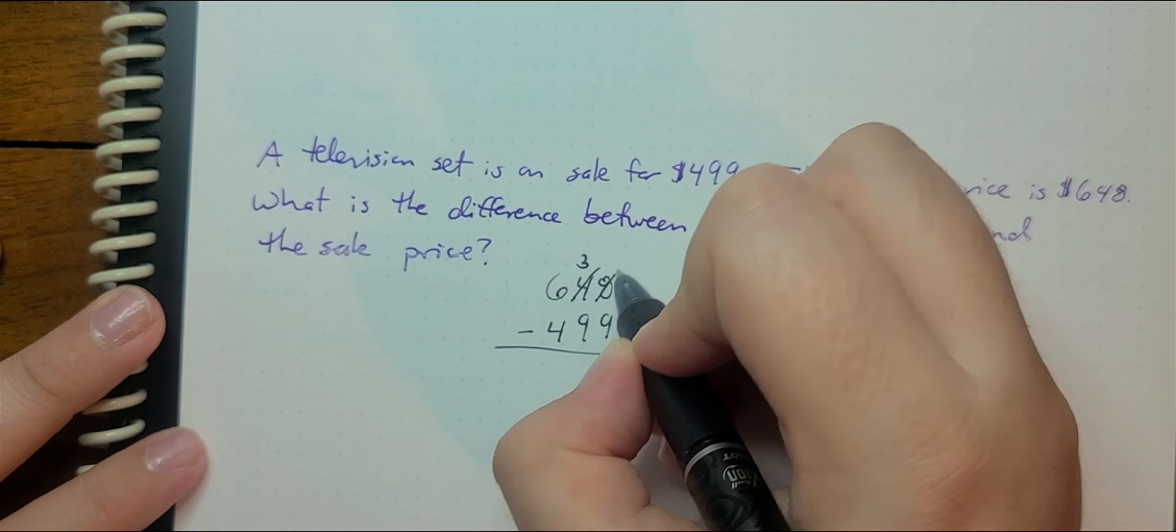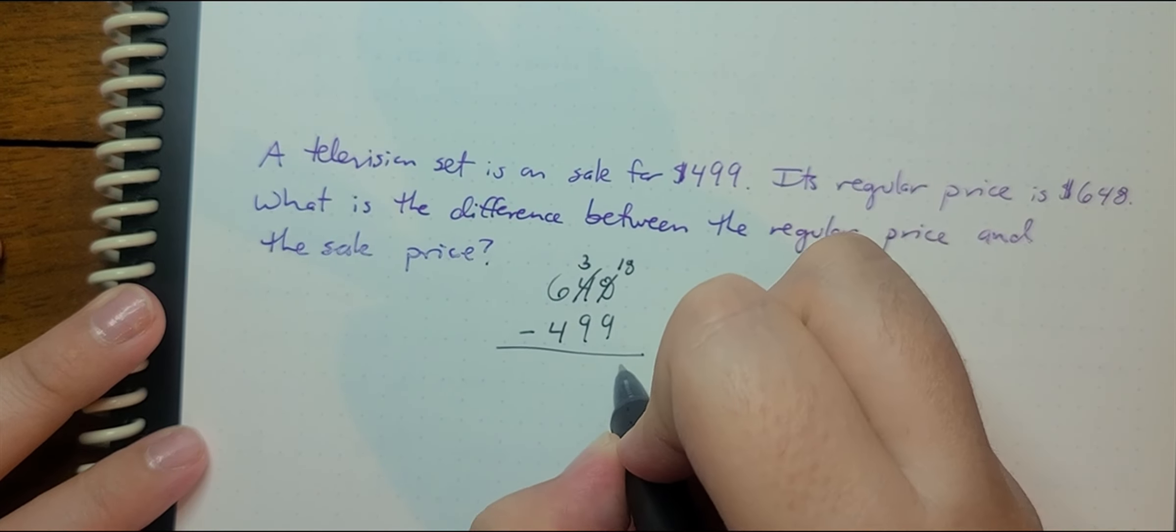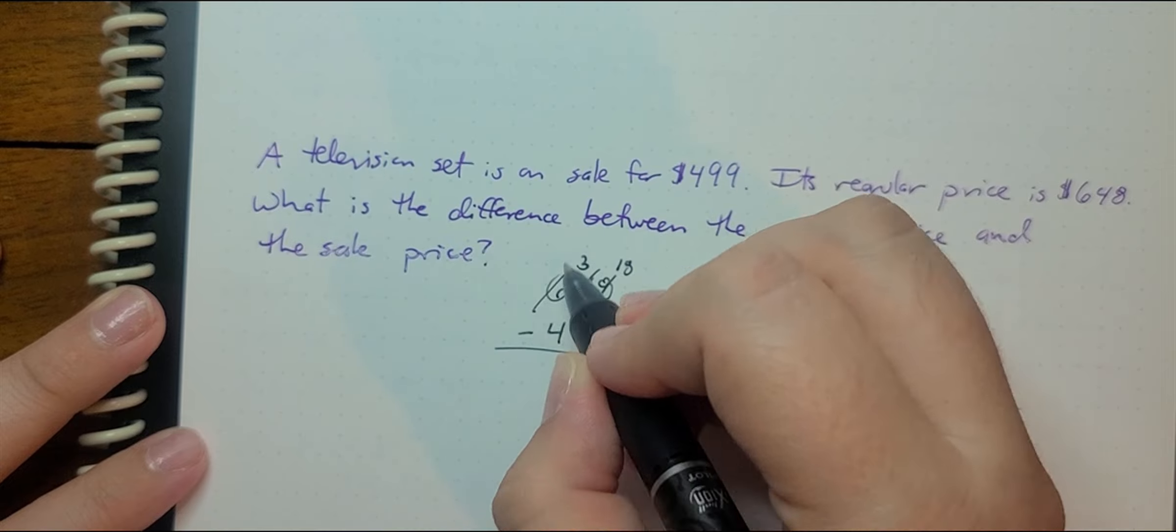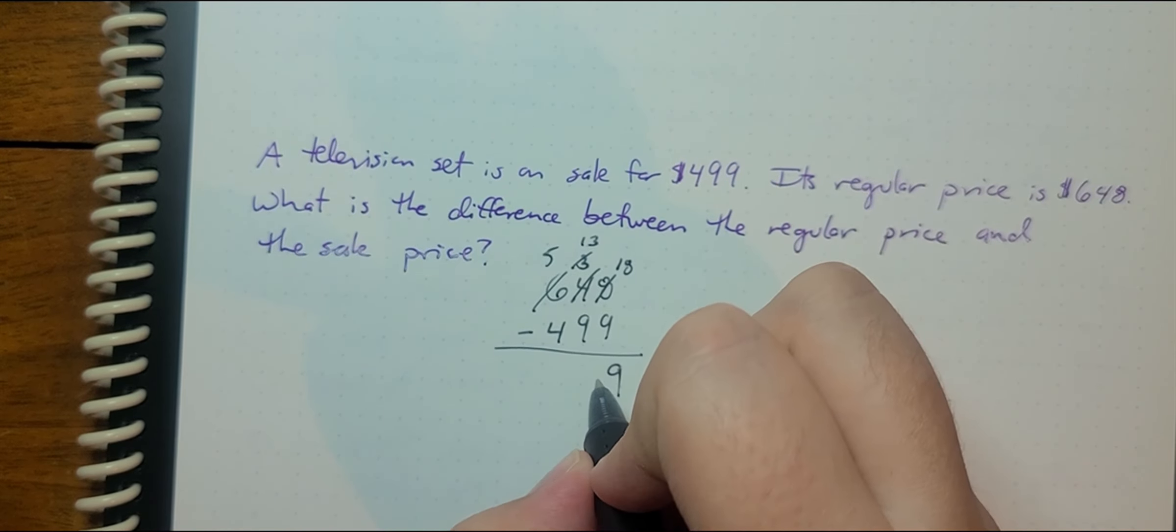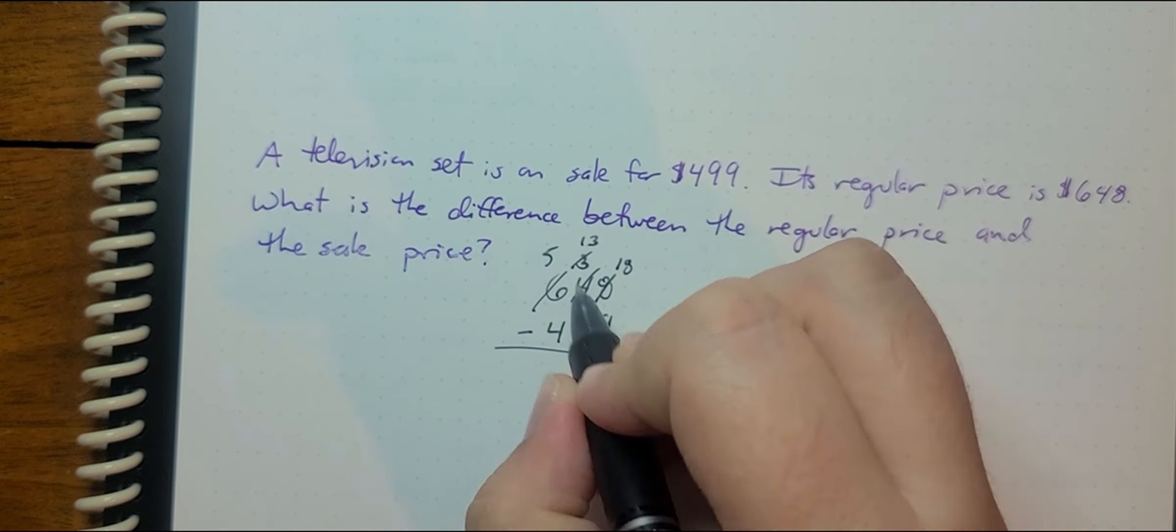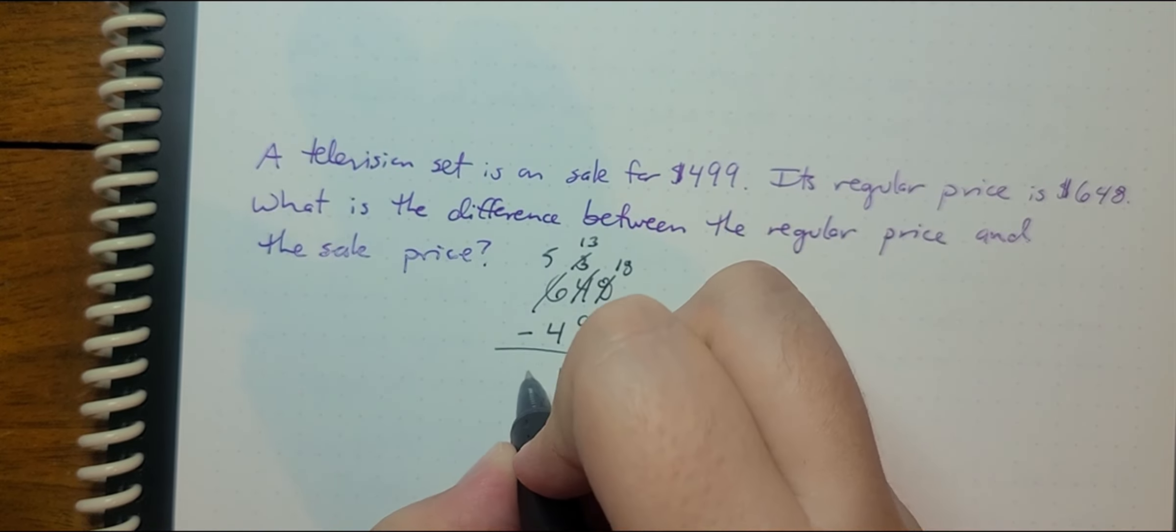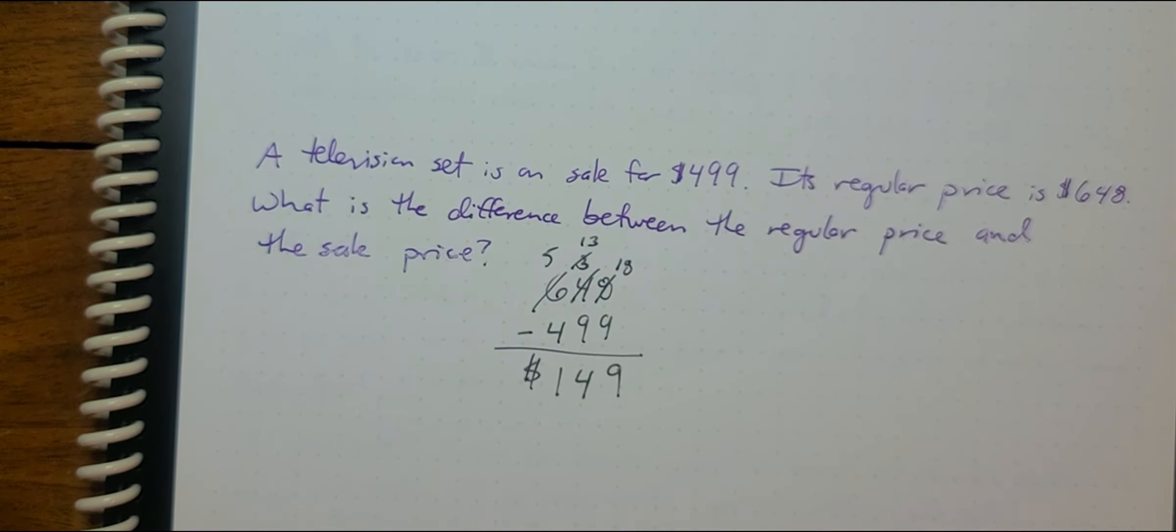So this will become a three. 18 minus nine is nine. This will become a five. That's a 13 now. 13 minus nine is going to be four. Five minus four is one. So our difference, we're going to save $149.